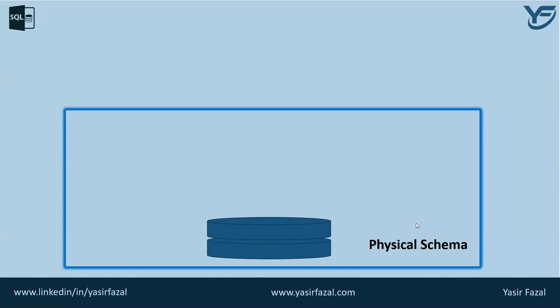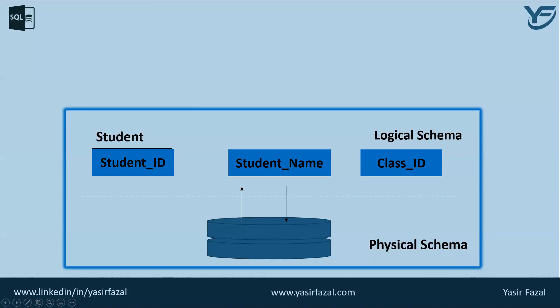The second type of database schema is the logical schema. This schema defines all the logical constraints that need to be applied on the stored data. For example, a student's data is stored on the hard disk in a file structure format, but how that data would be organized — for example, the student data contains student ID, student name, student age, student address, and which classes the student is enrolled in — this kind of logical structure is defined under the logical schema.